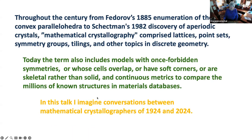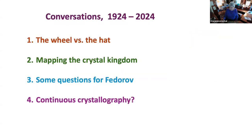In this talk, I imagine conversations between mathematical crystallographers of 1924 and 2024. This is in four parts: first, the wheel versus the hat — all these will be explained when we get there — mapping the crystal kingdom, some questions for Fedorov, and continuous crystallography.